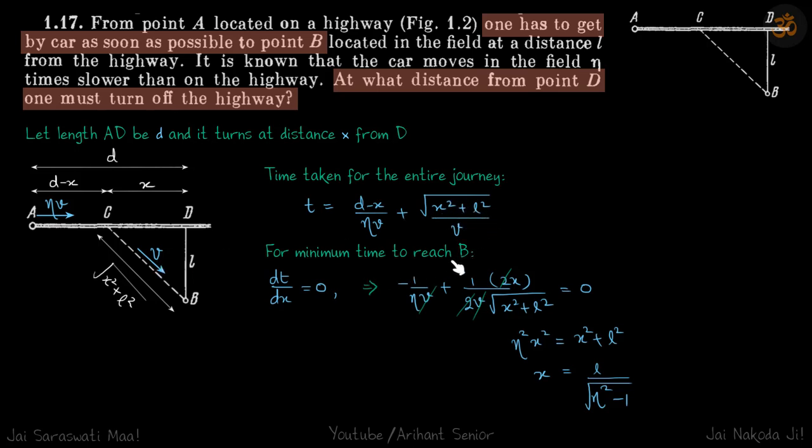For minimum time to reach B, we will differentiate this dT by dx because we want to minimize the time, that is equal to 0. So if you differentiate this, you will get your answer: x is equal to L by root of eta squared minus 1.